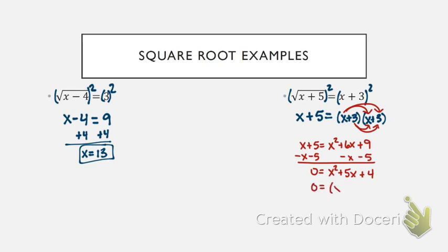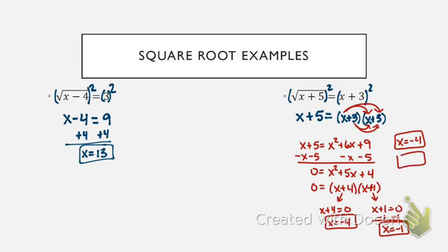So I need to factor, and when we factor this, we need factors of 4 that add up to 5. So 4 times 1 is 4, 4 plus 1 is 5. So I know my factors are x plus 4, x plus 1. To solve, we need to set both factors equal to 0. We get these two answers. We factor the quadratic, set those equal to 0, and we get negative 4 and negative 1.